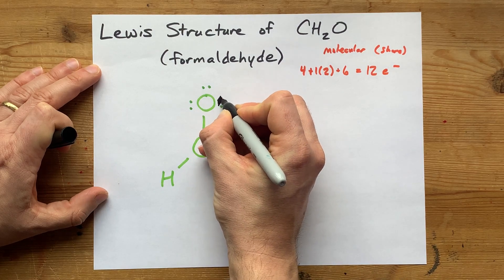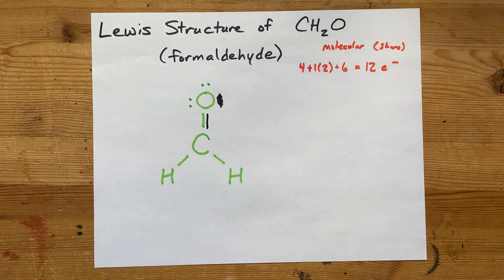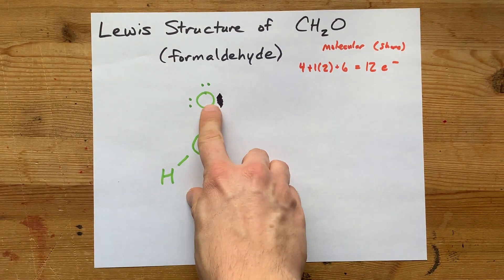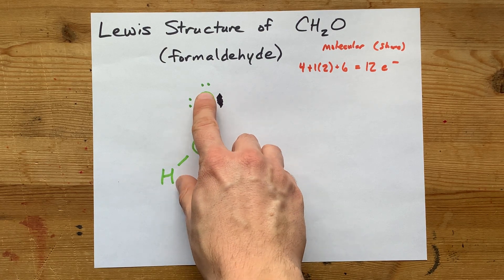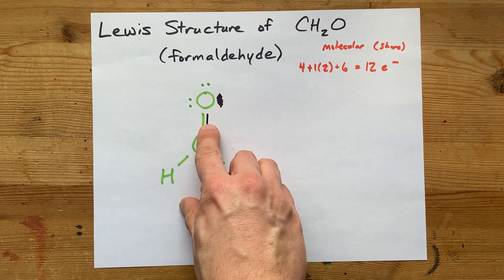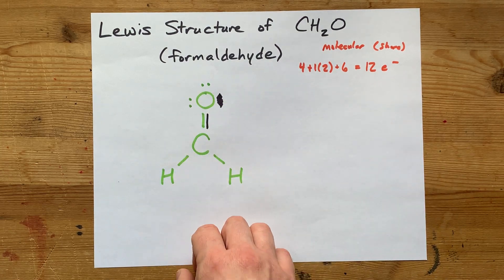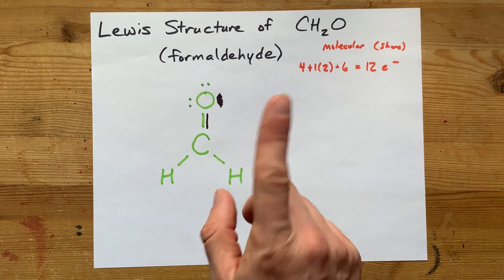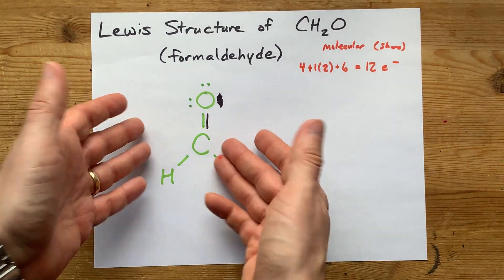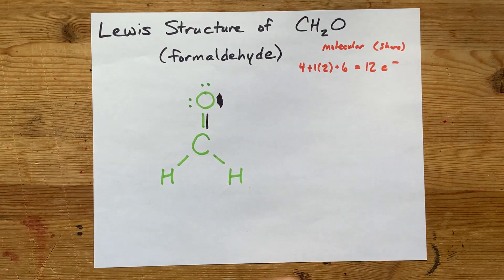Now, that pair of electrons, which belonged to oxygen, still belong to oxygen. So this oxygen still has two, four, six, eight electrons around it, but now it's sharing with carbon. So carbon has two, four, six, and now eight electrons around it. That's a completed octet for carbon, and that's the signal that we're done here.